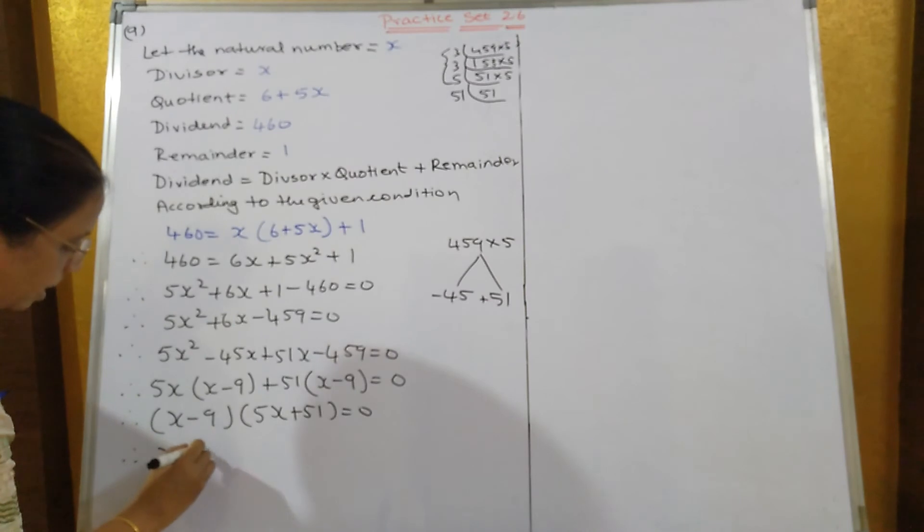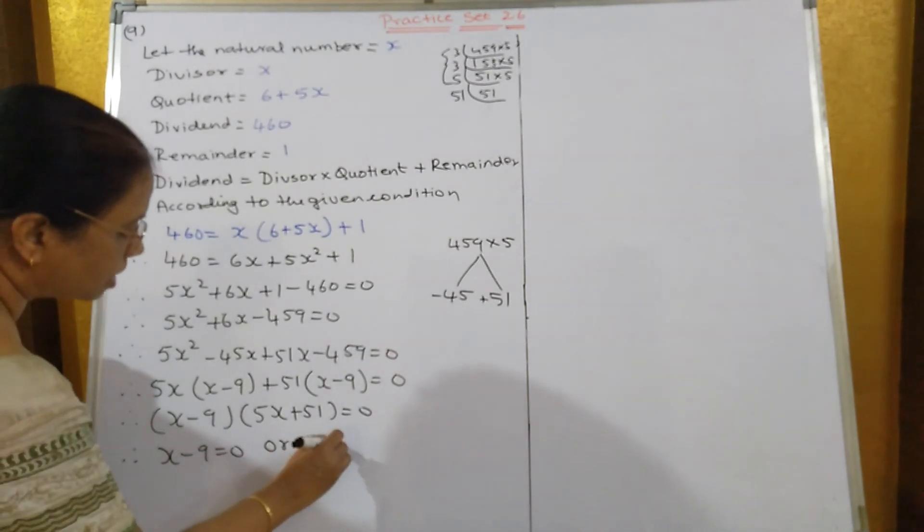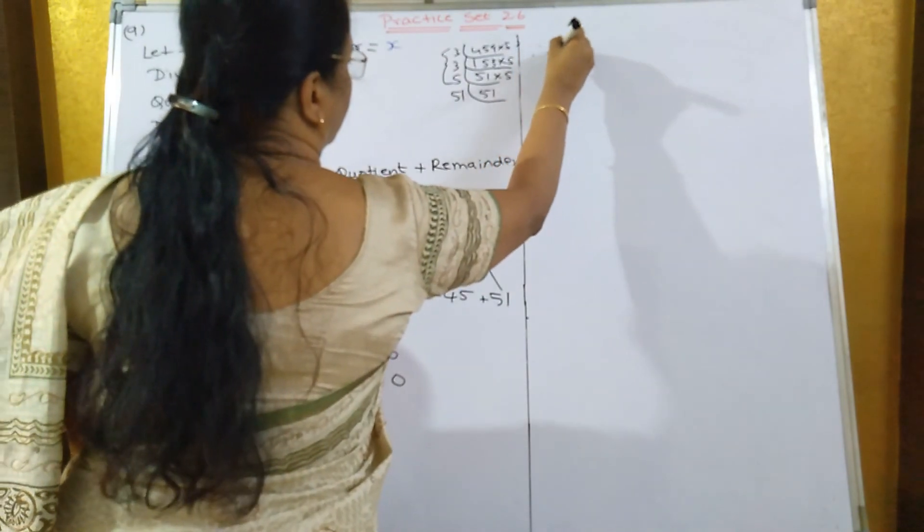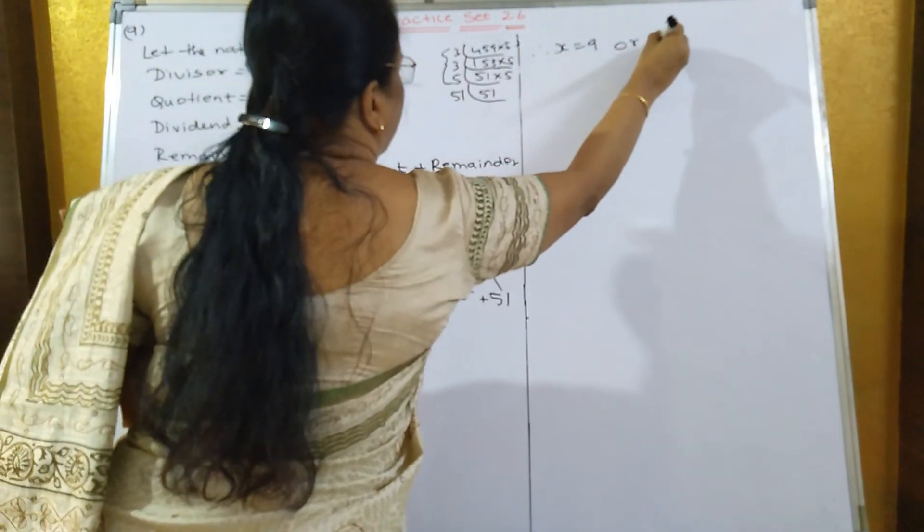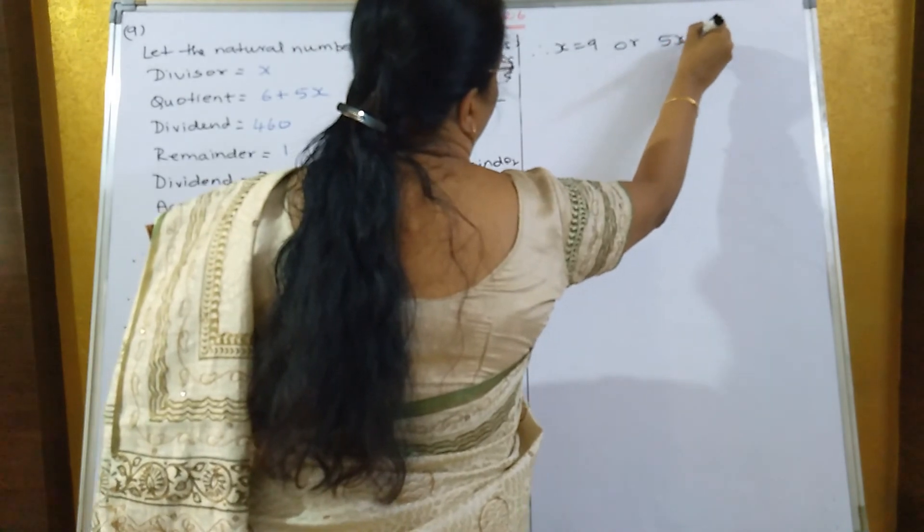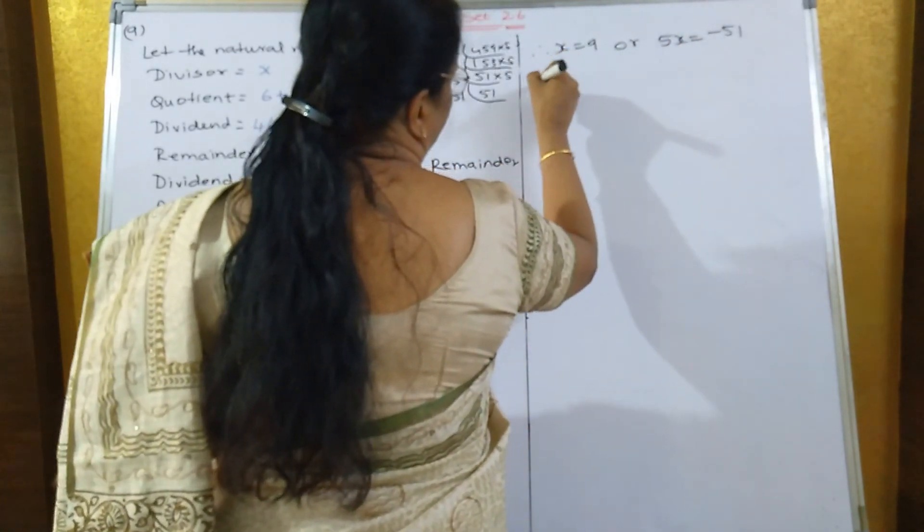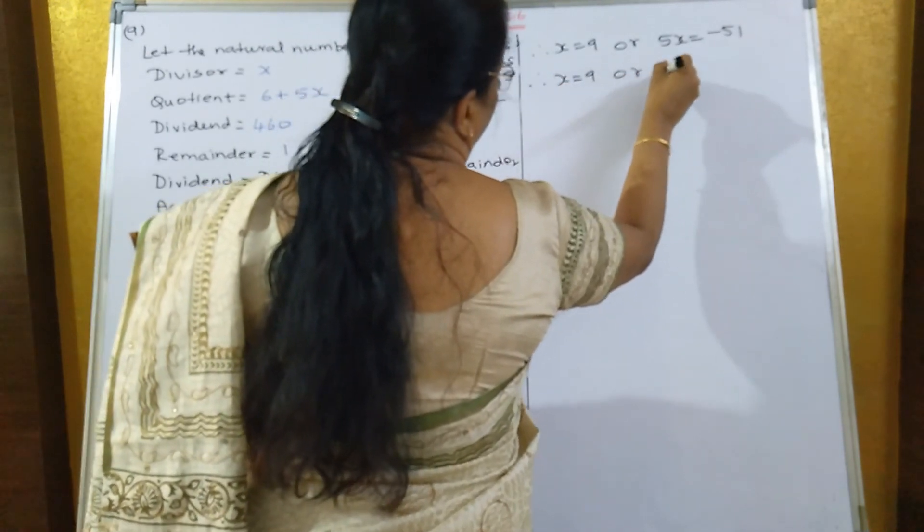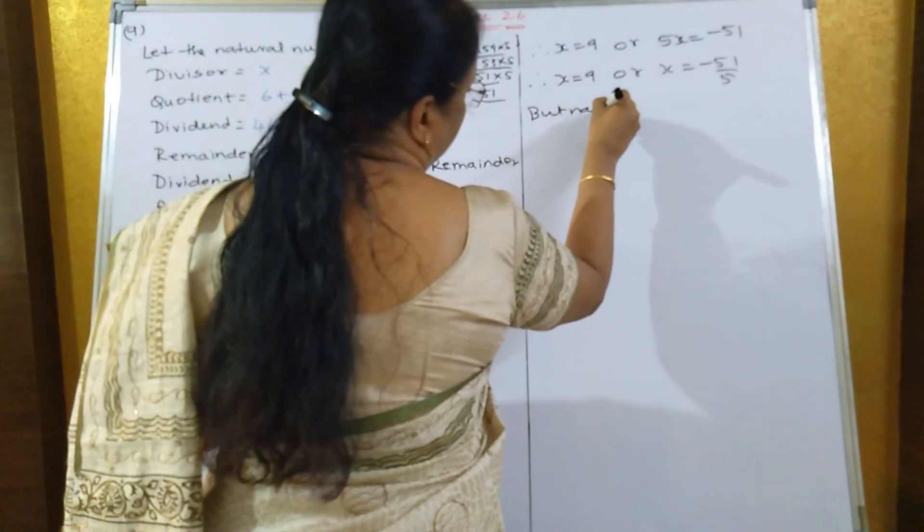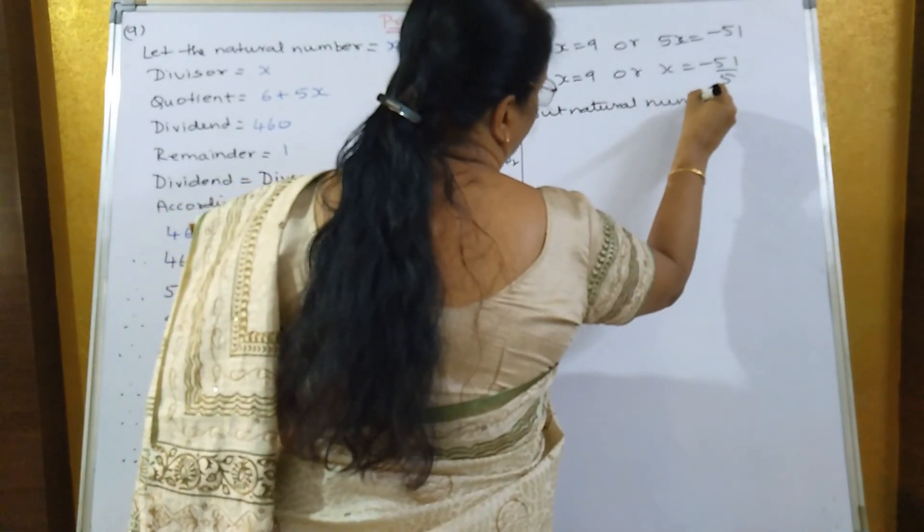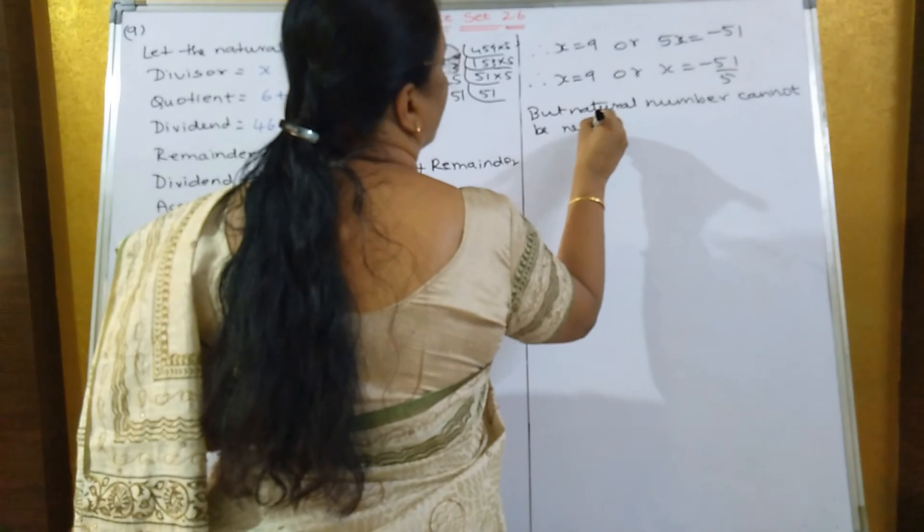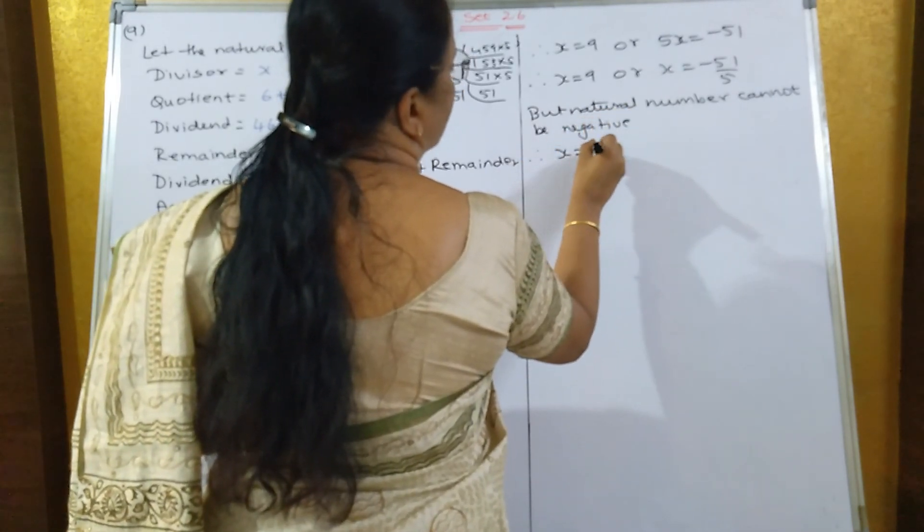x minus 9 is equal to 0, so x is equal to 9. Or 5x is equal to minus 51, therefore x is equal to minus 51 upon 5. But natural number cannot be negative. Therefore, x is equal to 9.